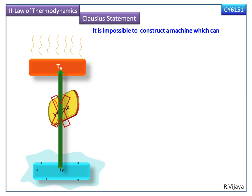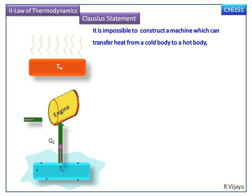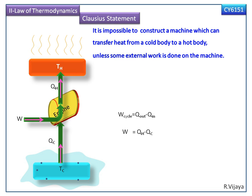It is impossible to construct a machine which can transfer heat from a cold body to a hot body unless some external work is done on the machine. W_cycle equals Q_out minus Q_in, or W equals Q_H minus Q_C.